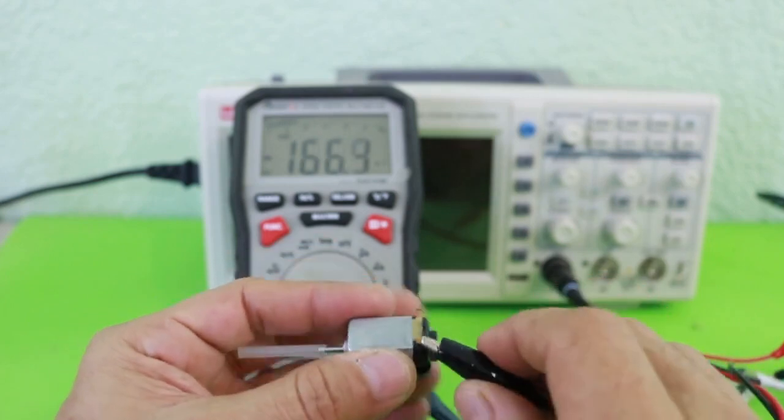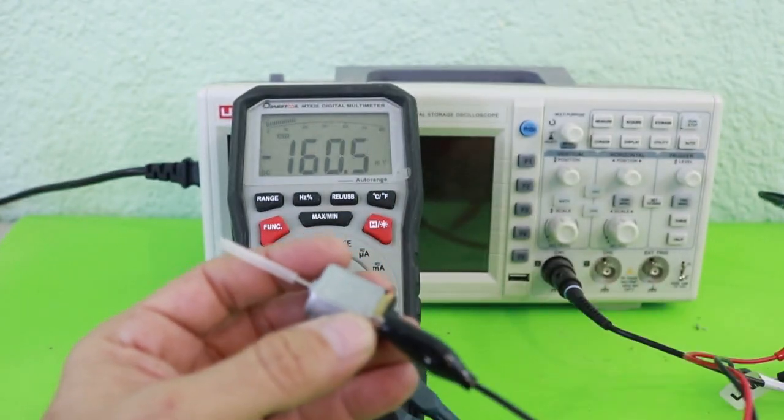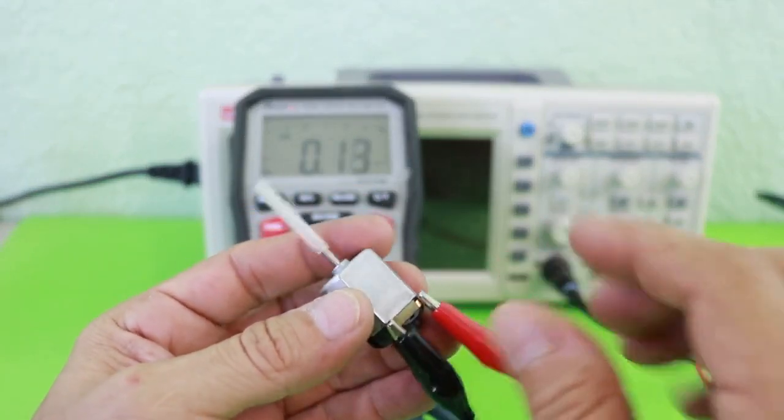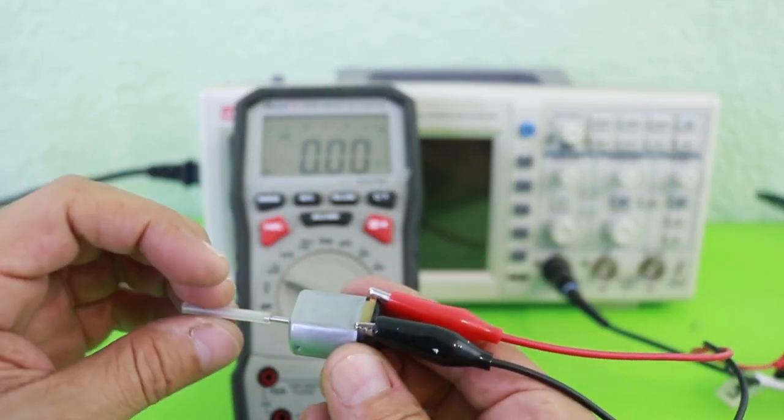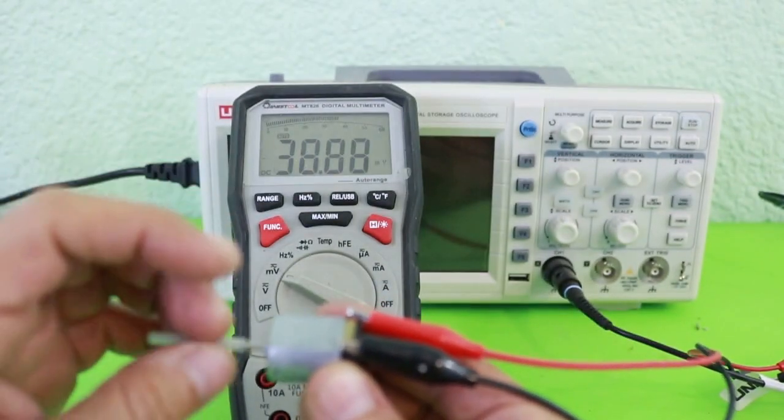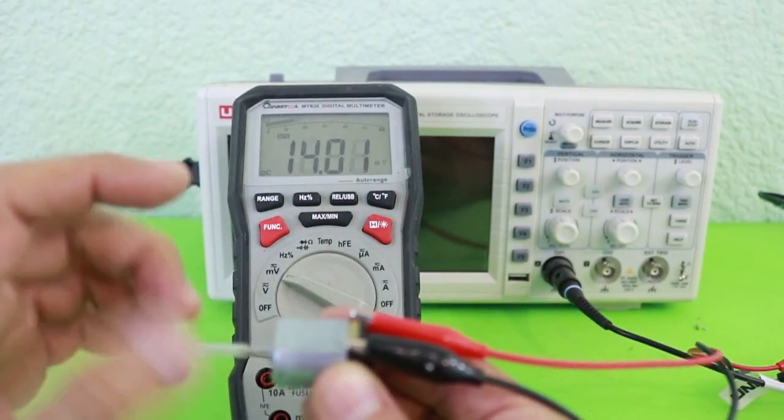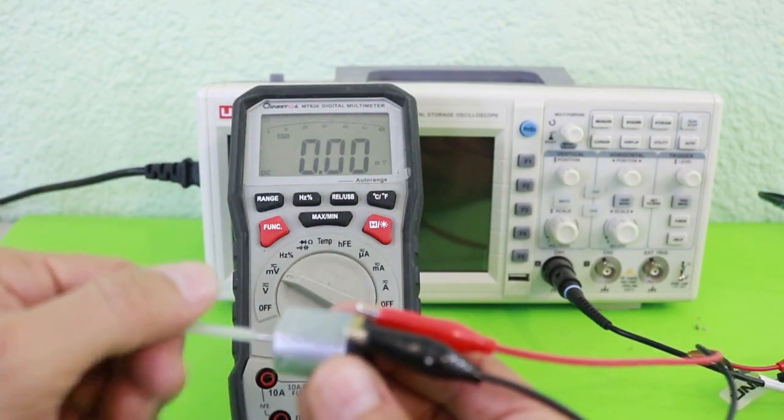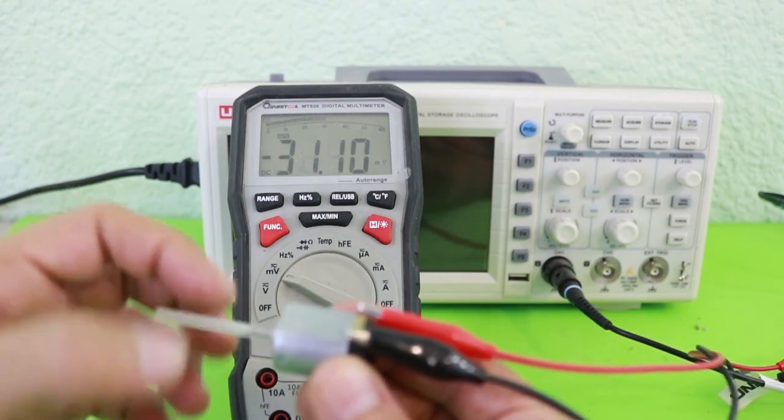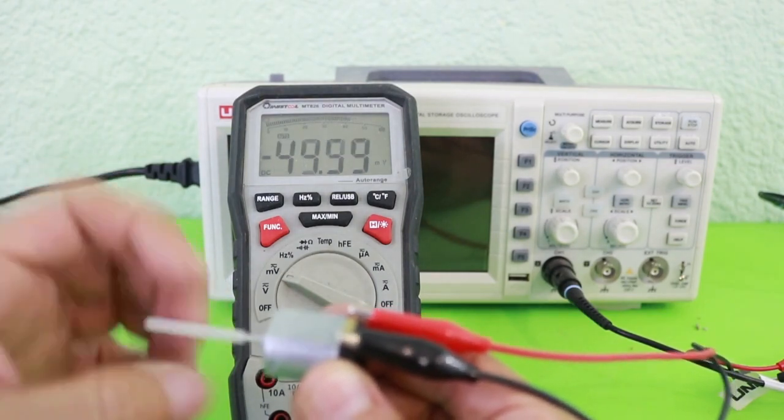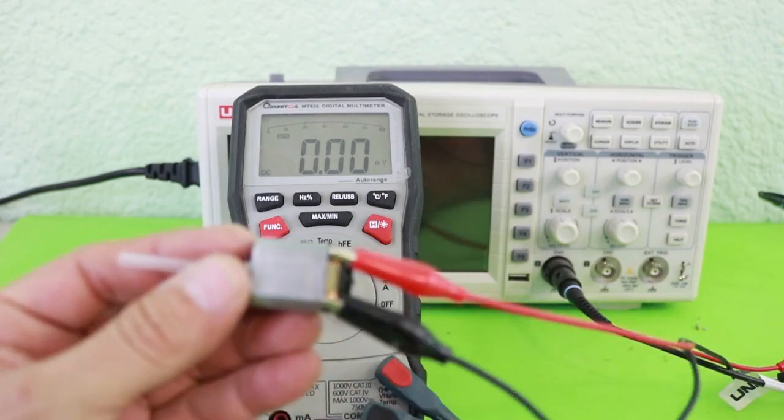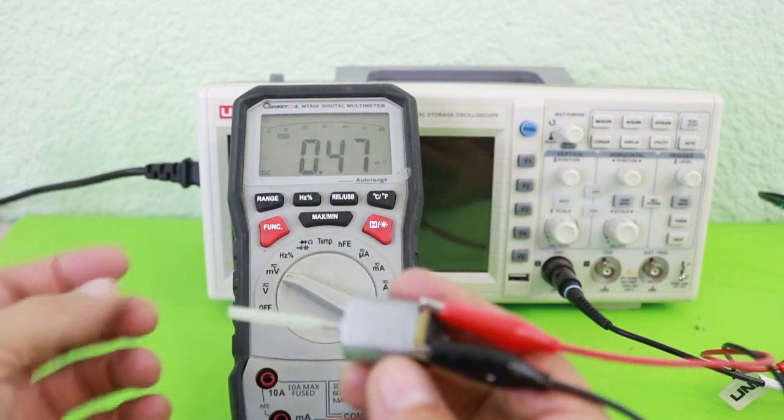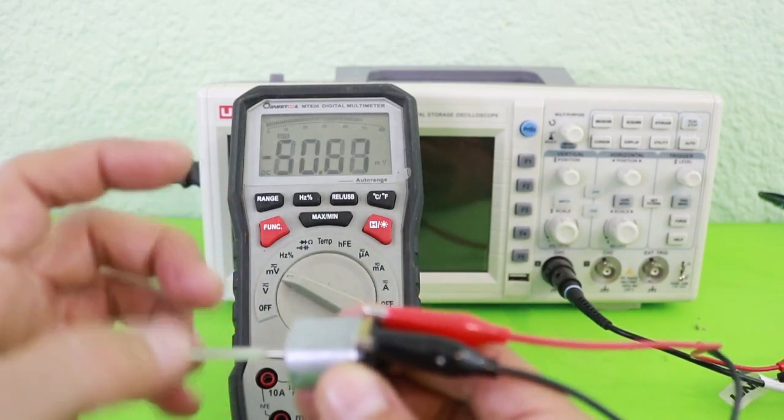Let's see if we connect the multimeter to the terminals of the motor. We make the axis turn manually and we obtain some millivolts, positive voltage. Now, if we turn the axis in the opposite way, we also get a voltage but it is negative. So we are obtaining DC from the motor and the sign of the voltage depends on the rotation.